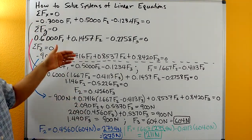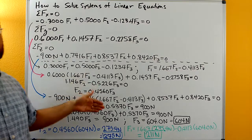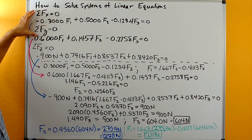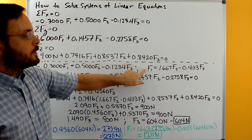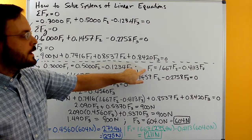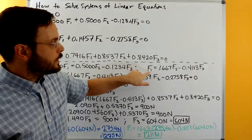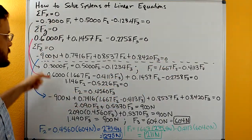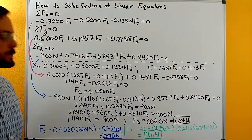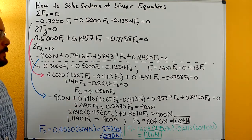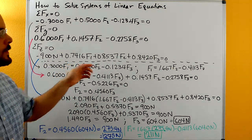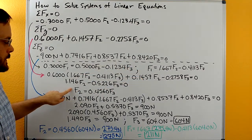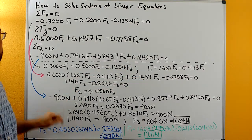Obviously, on an exam you'd want to be able to go through and solve it this way manually. If you only had two equations and two unknowns, all you'd need to do is make the first equation where you have f1 as a function of just f2, then substitute it into your second equation and you'd be all set. But with three equations and three unknowns, you have to do those two steps before substituting into that last equation.